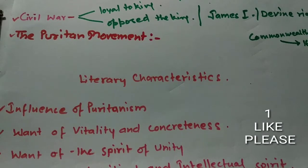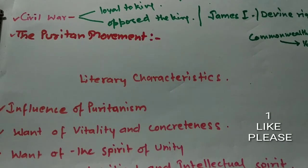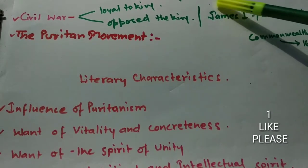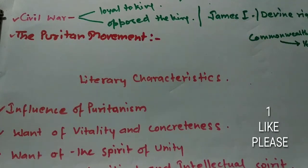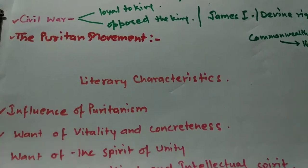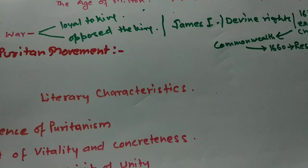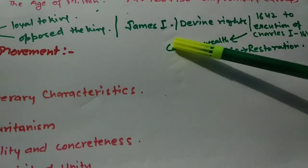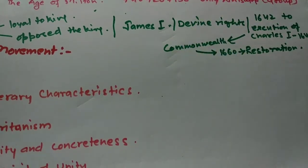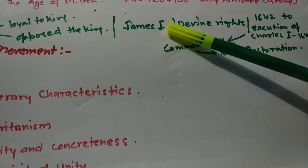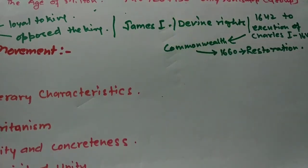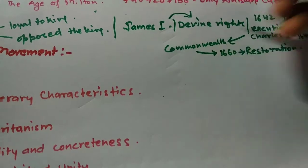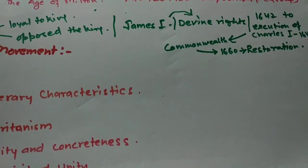The first thing is the civil war, which is connected to the Puritan movement. The story starts with James the First, who was king of England at that time and was made king by parliament. He strongly believed in divine rights — the belief that the king's authority is granted by God, meaning he can do anything.